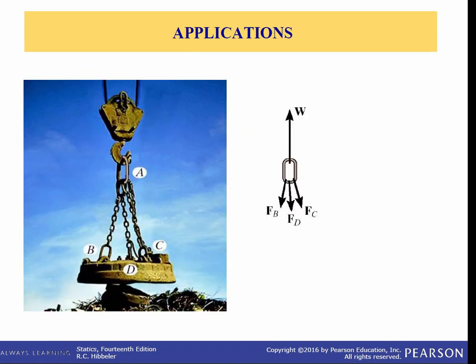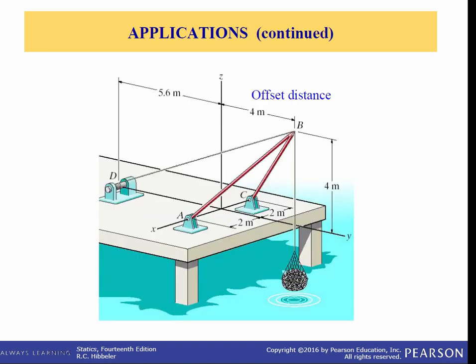Let's look at an application. If you know the weight of this electromagnet and its load, how can you find the forces in these three chains? You need to know those forces so you can choose the correct chain so that it will not fail. Here we have a shear leg derrick designed to lift a maximum of 200 kilograms of fish. How can you analyze this offset distance of 4 meters, and how does it affect the tension in cable DB and the forces in members BA and BC?